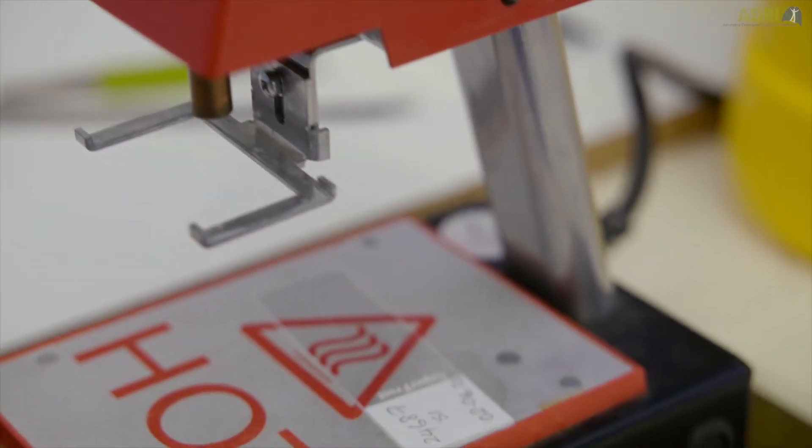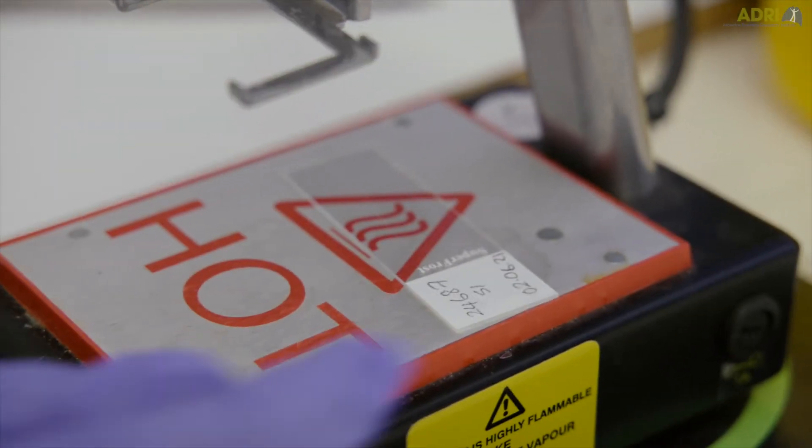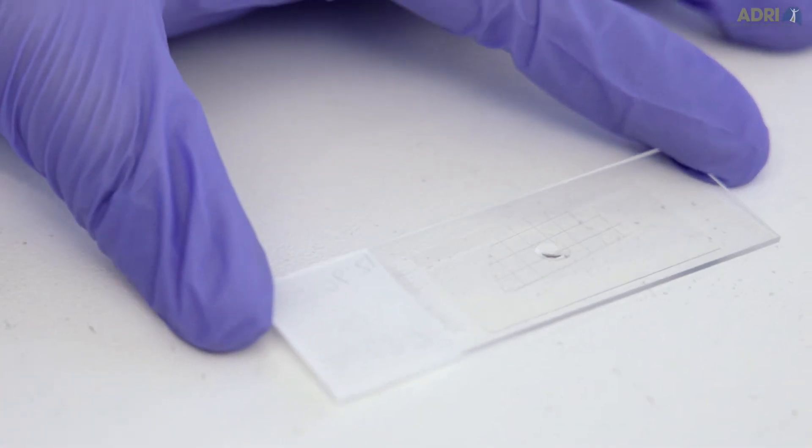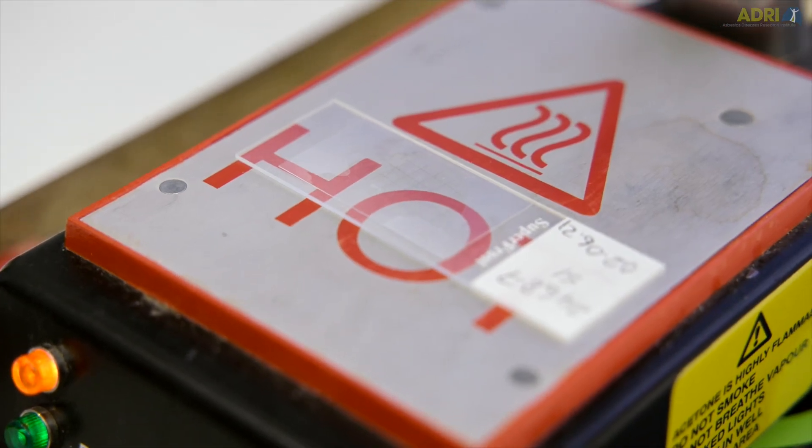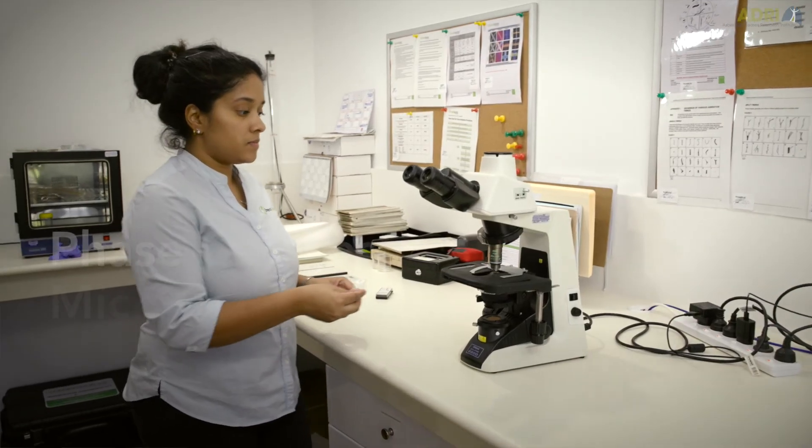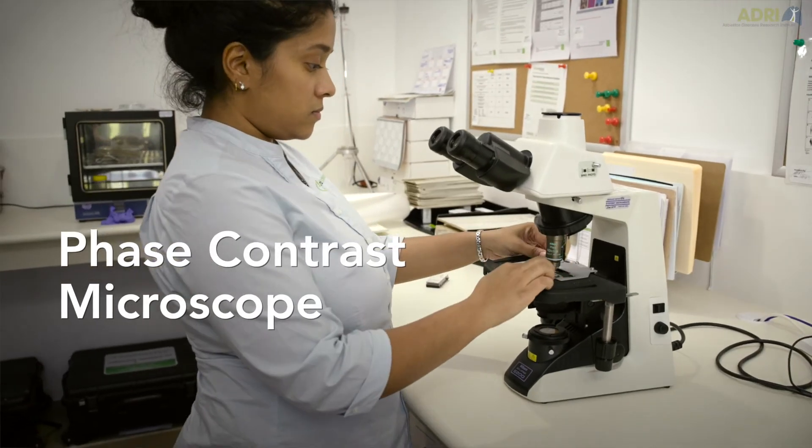Otherwise we wouldn't be able to analyse it under the microscope because we need light to go through so that we can look at the fibres on that filter. We then put triacetan onto a cover slip and mount it so that we've got the slide ready for viewing and preparation under the phase contrast microscope at 400 times magnification.